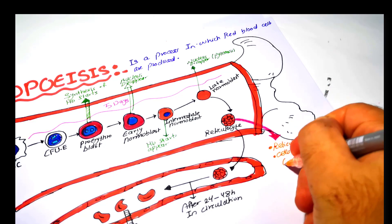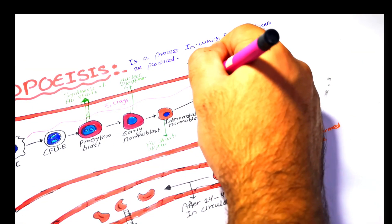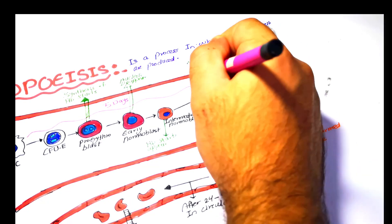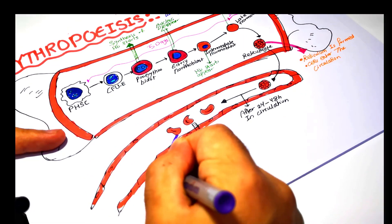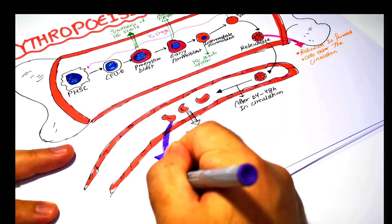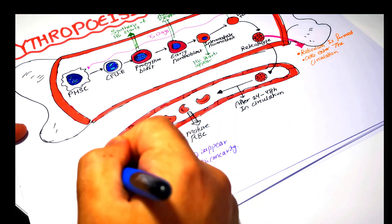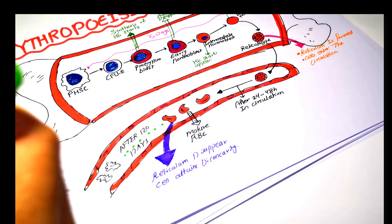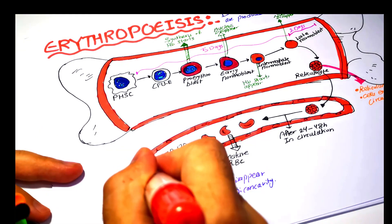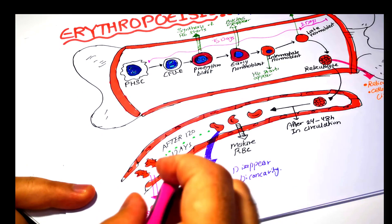The time required for differentiation of the pluripotent hematopoietic stem cell into the late normoblast is about five days, while from the late normoblast into the reticulocyte it takes two days. The mature red blood cells will have a biconcave shape and do not have any reticulum. The mature RBC will circulate for about 120 days, and after that these cells will be engulfed and destroyed by the reticuloendothelial cells, which are usually located in the spleen and also may be located in the liver, including macrophages.